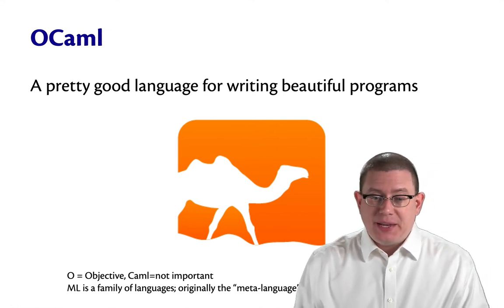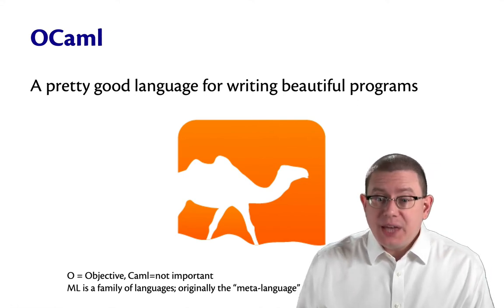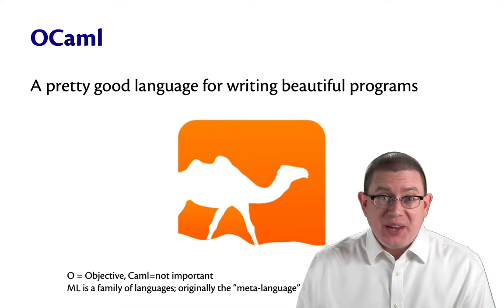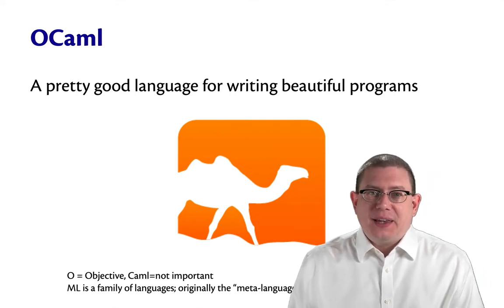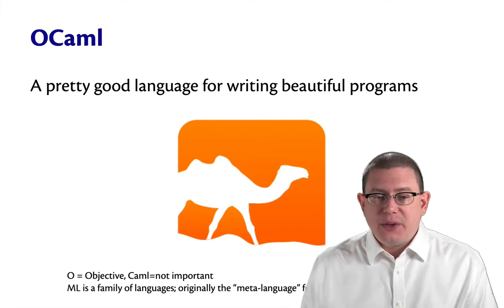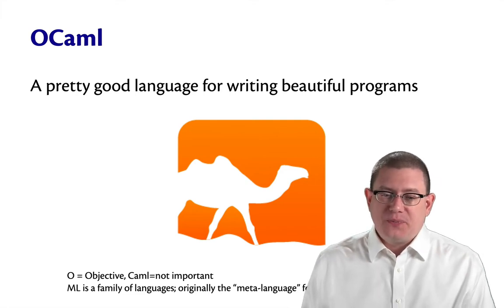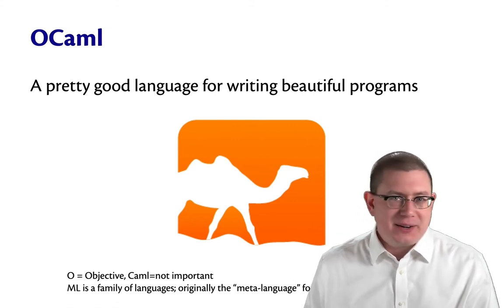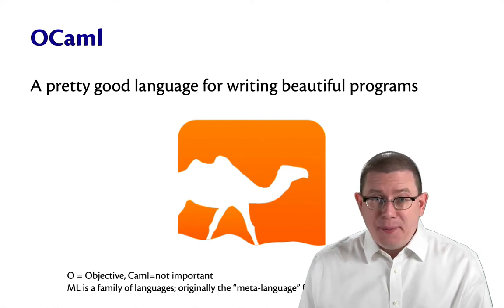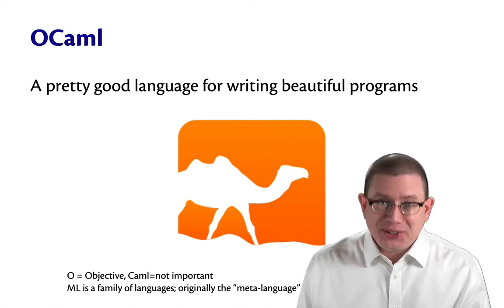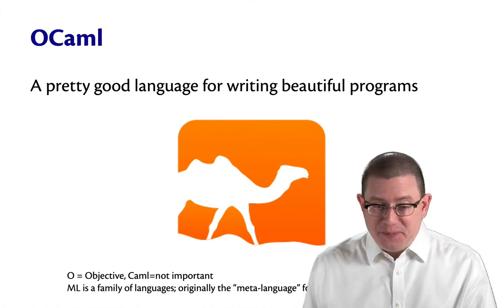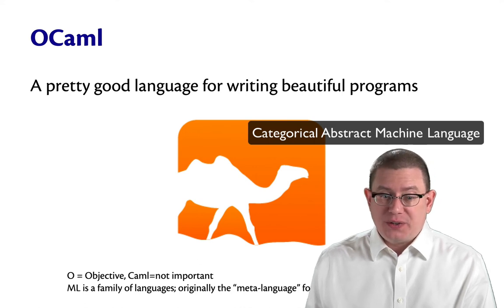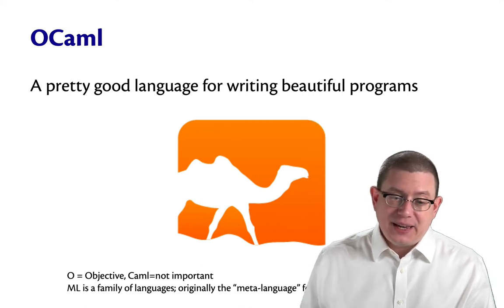People always want to know what the name means. I'm going to tell you, but I'm also going to warn you, it's not helpful to know. The O in OCaml stands for objective — it's because there was an object-oriented layer that was added to the original language. We're not even going to use the object-oriented features of OCaml this semester, so that doesn't matter to us at all. Caml is the especially unhelpful part. It's an acronym. It stands for Categorical Abstract Machine Language. See, I told you it wasn't helpful.